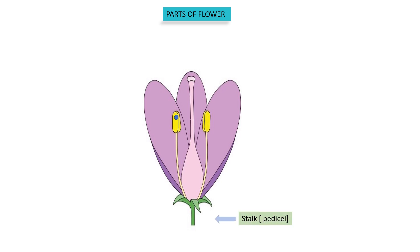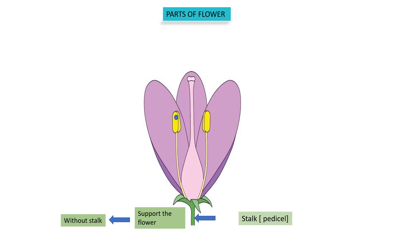Stalk. The botanical term is pedicel. The function of the pedicel is to support the flower. It helps in exposing the flower to the sun and wind, and positions it so that the aroma and color attract pollinating agents more easily.